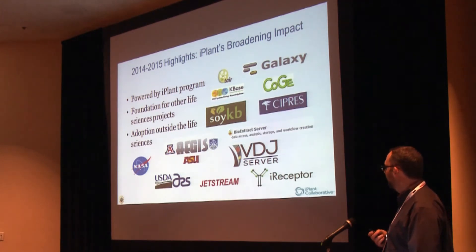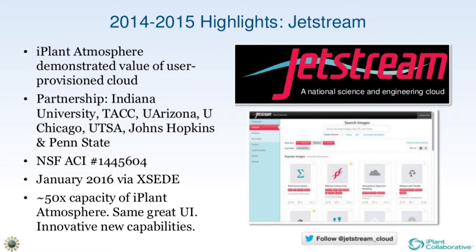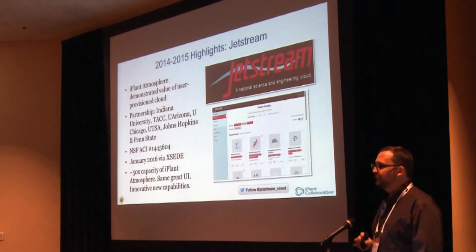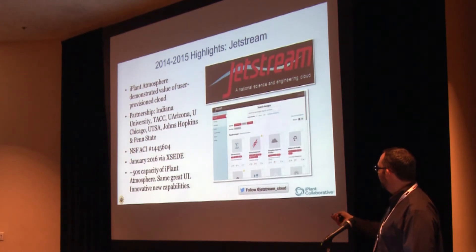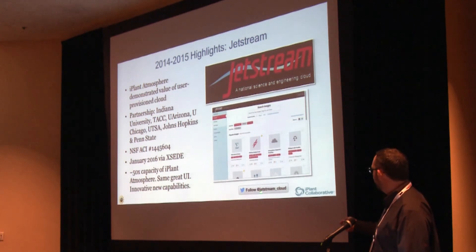Finally, iPlant technologies are going to be the basis of a new supercomputing system available for all domains of science. Who here has used iPlant Atmosphere? Atmosphere is fantastic user-provisionable cloud — it demonstrated the value of user-provisioned cloud and ease of use. We partnered with Indiana University, UT San Antonio, Johns Hopkins, and Penn State to bring Atmosphere to basically the whole US. This is recently funded by NSF Advanced Cyber Infrastructure and will be available in January 2016 via the Jetstream program — about 50x the capacity of Atmosphere, with the same great user interface plus innovative new capabilities. Follow Jetstream Cloud on Twitter to be the first to know.